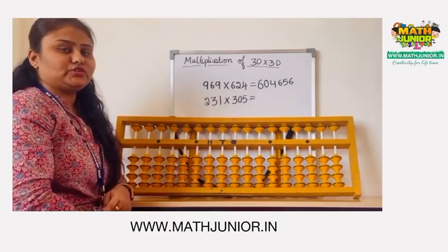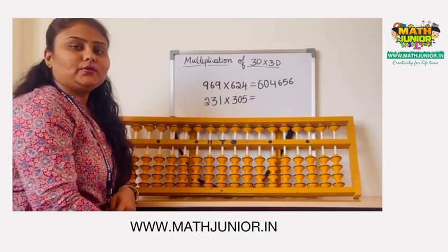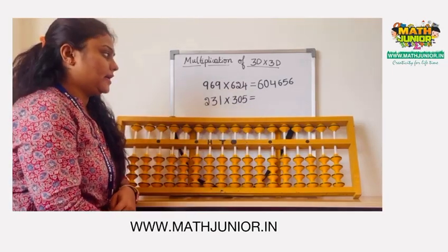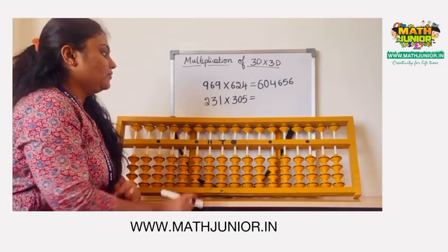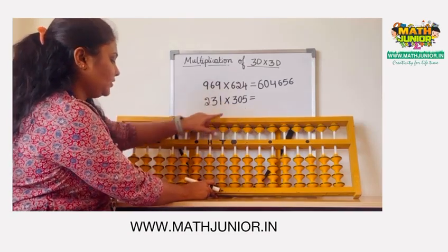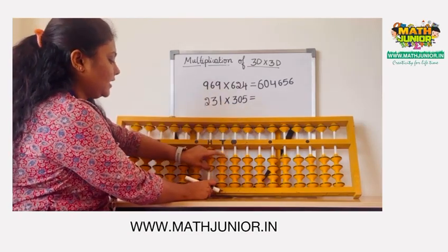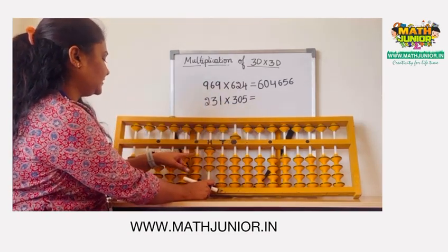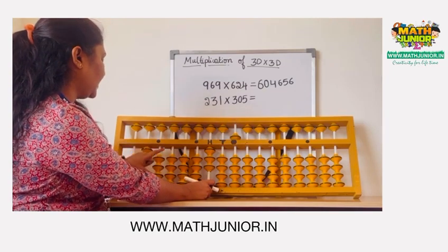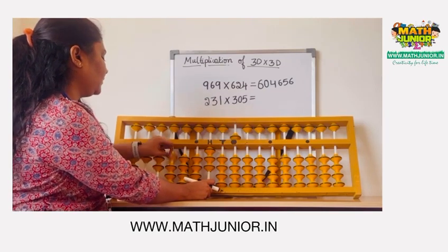Next question is 231 into 305. First, we have to place 305 using 110 and minus 50. Then skip 2 rods and place 231.